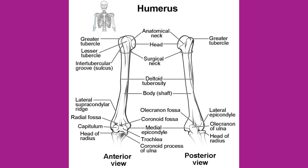Passing between the greater and lesser tubercles is the narrow intertubercular groove, also called the sulcus or bicipital groove, because it provides passage for a tendon of the biceps brachii muscle. The surgical neck is located at the base of the expanded proximal end of the humerus where it joins the narrow shaft, and it is a common site of arm fractures. The deltoid tuberosity is a roughened, V-shaped region located on the lateral side in the middle of the humeral shaft.